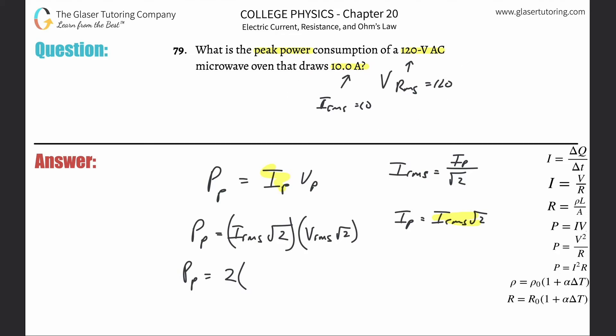And then now plug in your root mean square values that were given in the problem. The hardest part about this is knowing that they gave you the root mean square values. If they don't say they're peaks, just assume they're root mean squares. So this is going to be then times 120. So two times 10 times 120, 2.4 times 10 to the three watts. That's the peak power.